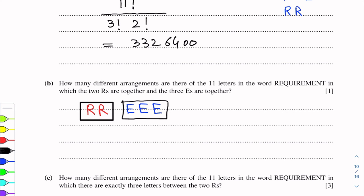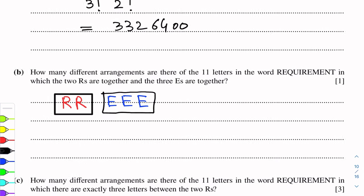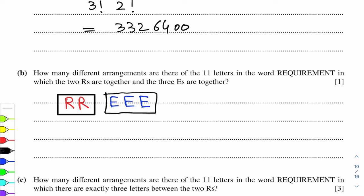The remaining letters are Q, U, I, M, N, T. Total is 1, 2, 3, 4, 5, 6, 7, 8 letters when we treat RR and EEE as single units.